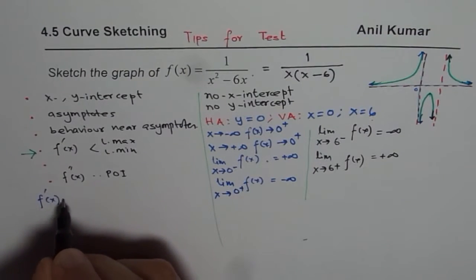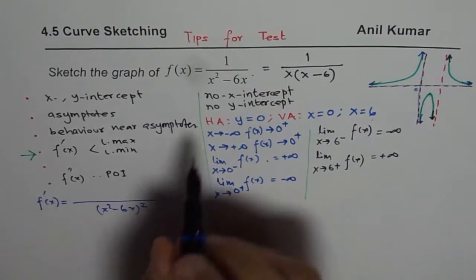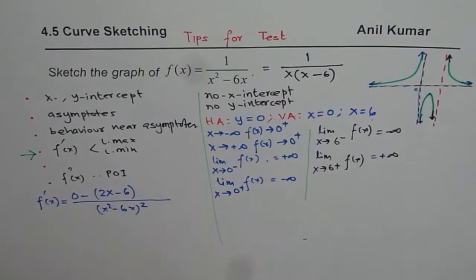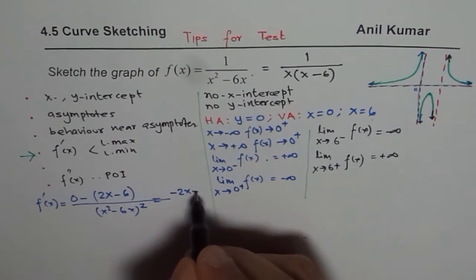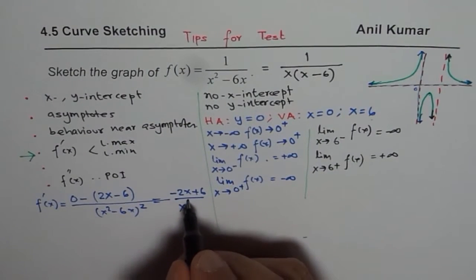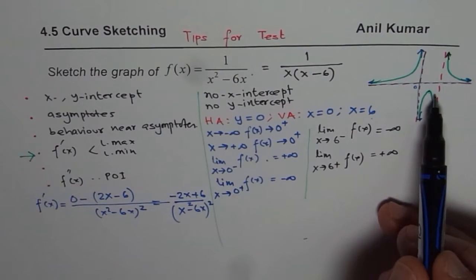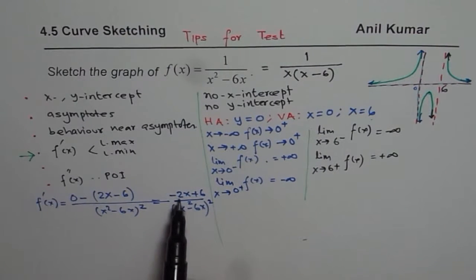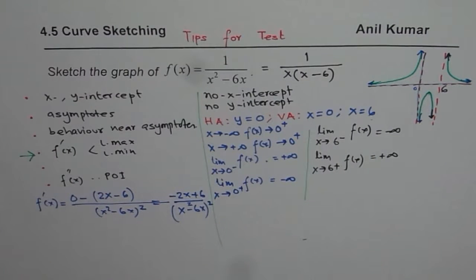Let's find the first derivative using the quotient rule. f'(x) = [0 · (x² - 6x) - 1 · (2x - 6)] / (x² - 6x)², which simplifies to (-2x + 6) / (x² - 6x)². Setting the numerator equal to zero: -2x + 6 = 0 gives the critical number x = 3.